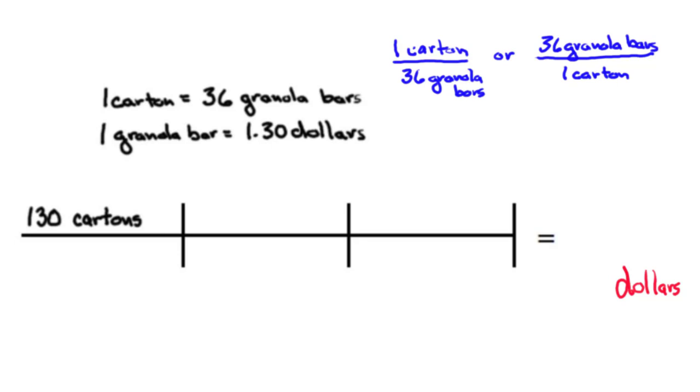And likewise I could make a conversion factor of this as well: one granola bar equals 1.30 dollars. So I could say one granola bar over 1.30 dollars, or I could say 1.30 dollars over one granola bar.